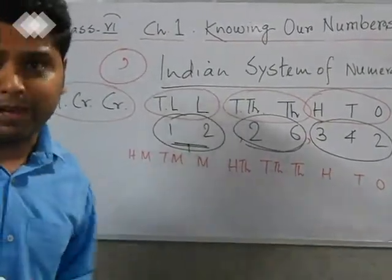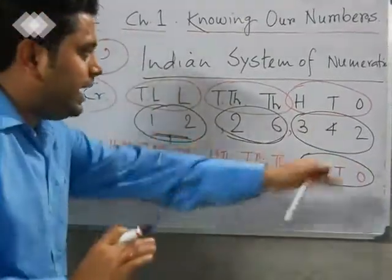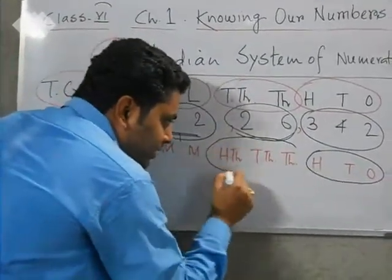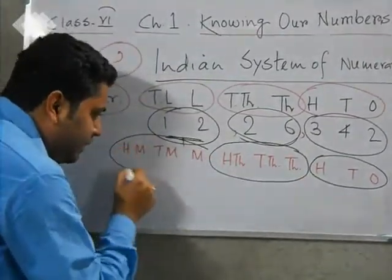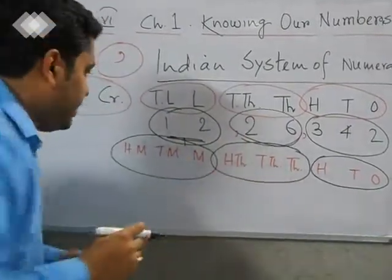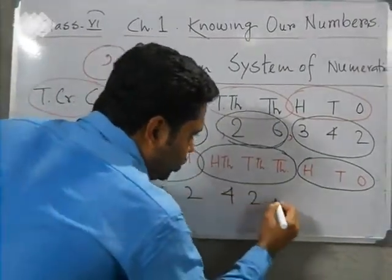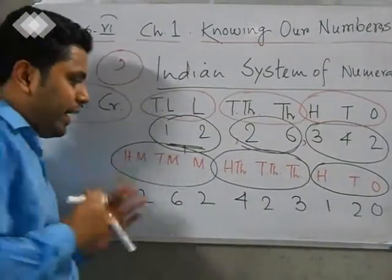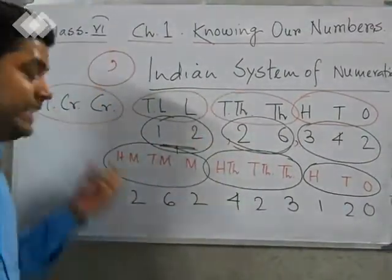In the international system, families are separated with three members each — same as the first family of three in the Indian system. Now if we place a number: 2, 3, 2, 4, 2, 3, 1, 2, 0 — how can we read this value? We have to enter commas family-wise. The first comma goes after the first three digits, then the thousand family, and then the million family.